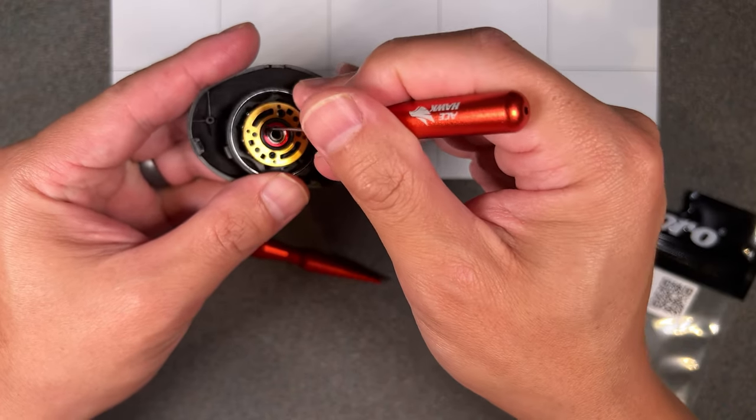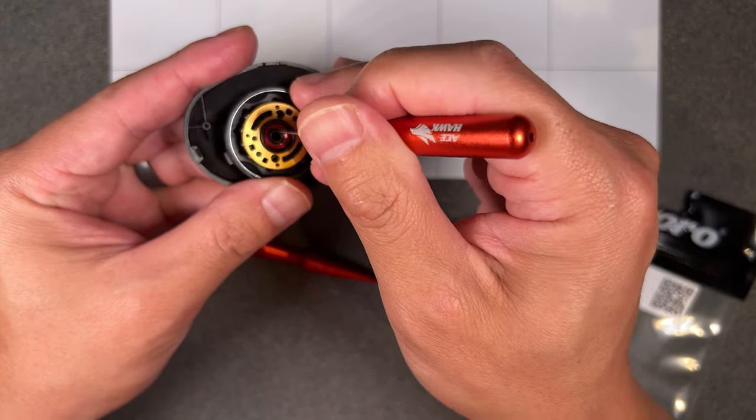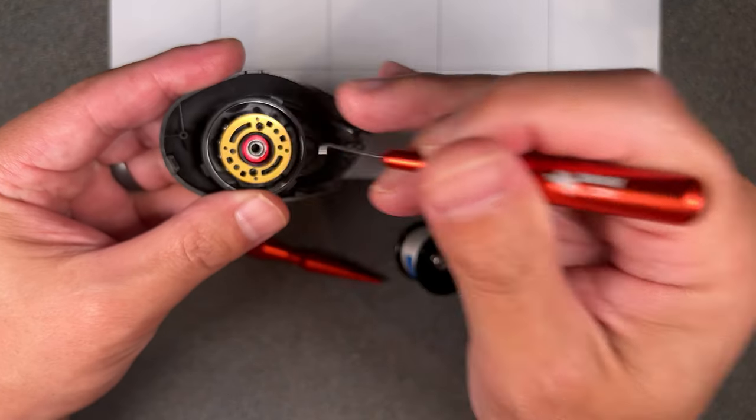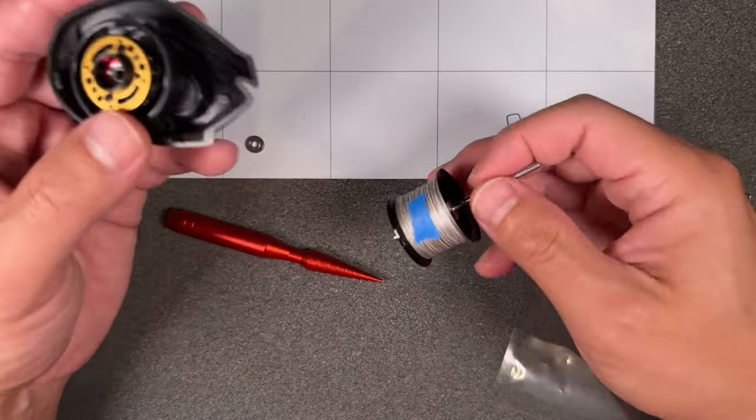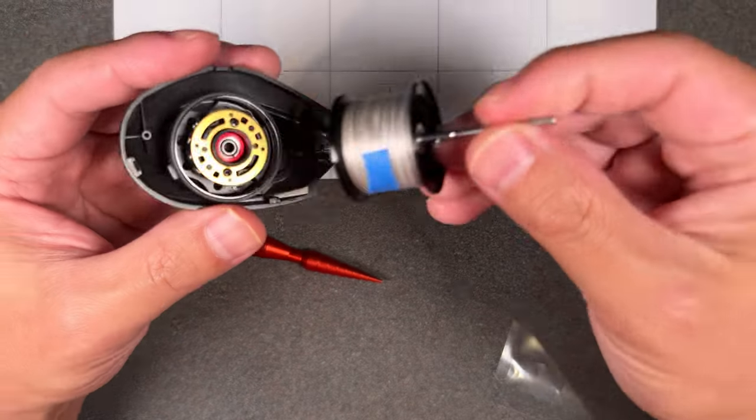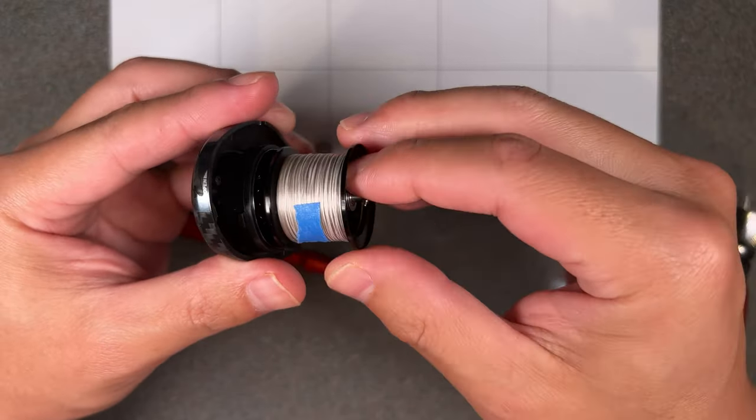And so the other thing that I noticed is that this Roro bearing does not seat nearly as well. The O-ring, I don't know, for whatever reason, maybe the size is a little bit smaller. And I'm trying to make sure that everything is seated, but it just doesn't seat as well as the Aldebaran bearing. I guess the tolerances for the outer race are just not going to be as good.